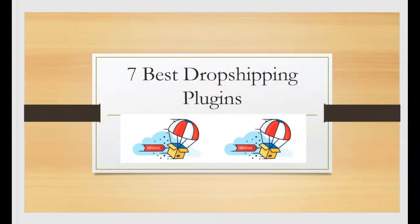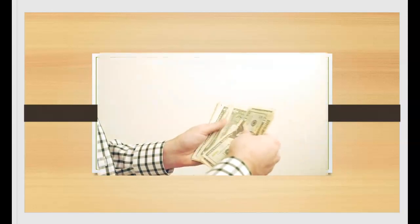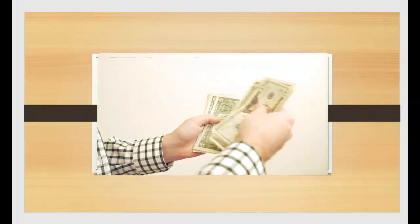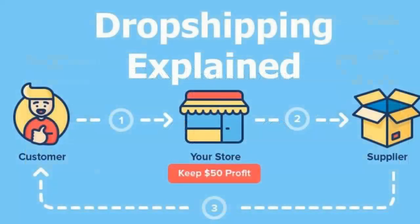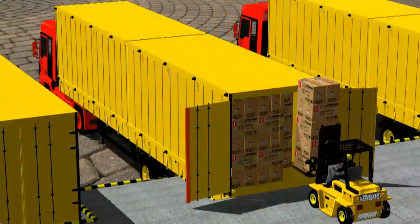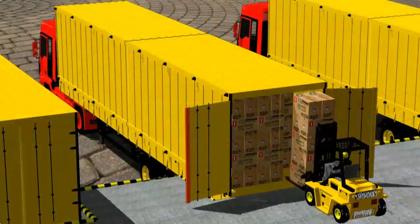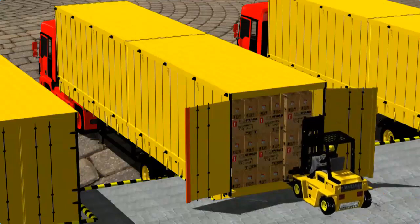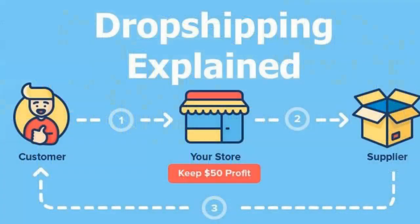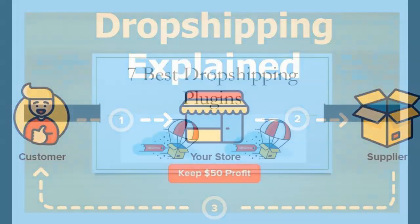The dropshipping business model is actually one of the best ways to make money online. The whole idea behind the business is to sell a product without buying the product in the first place — instead you use your customer's money to buy the product and have the supplier on AliExpress ship it to your customer.